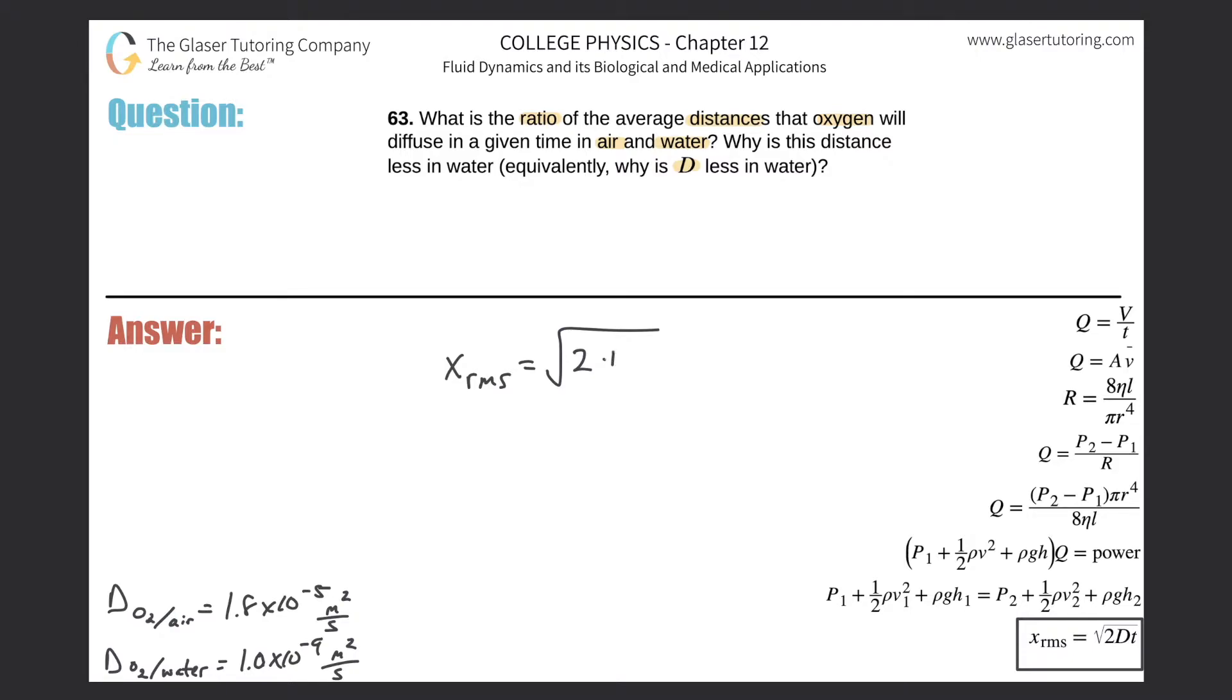x_rms = √(2Dt). Capital D here, like we said, is the diffusion constant that you'll probably have to look up - this is right from the text. The time doesn't particularly matter since we're creating a ratio here. We're going to do air to water. It doesn't say what to what, but I'm going to compare air to water.